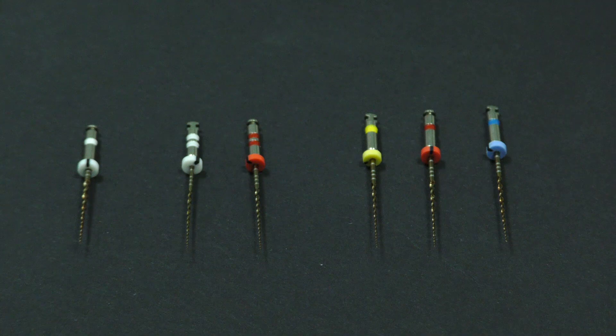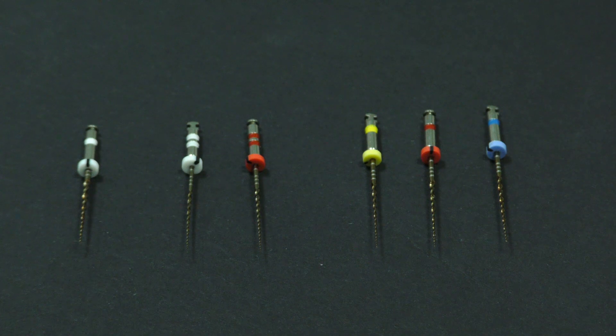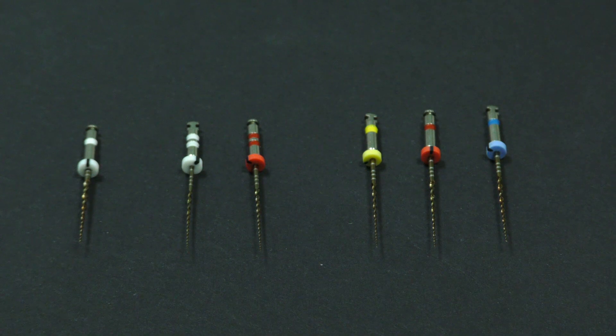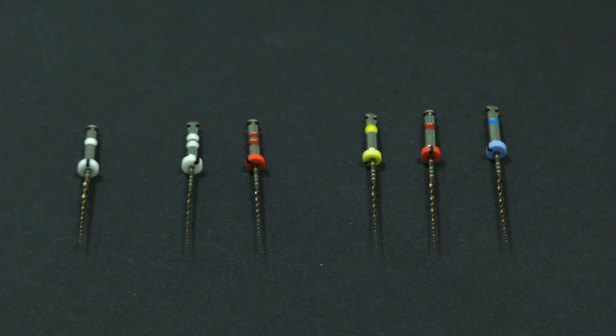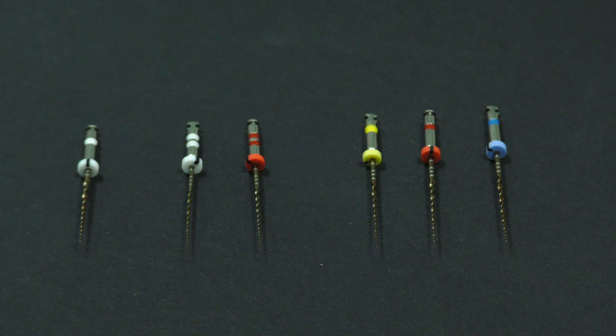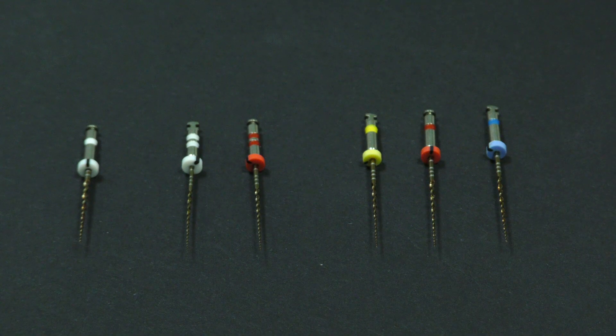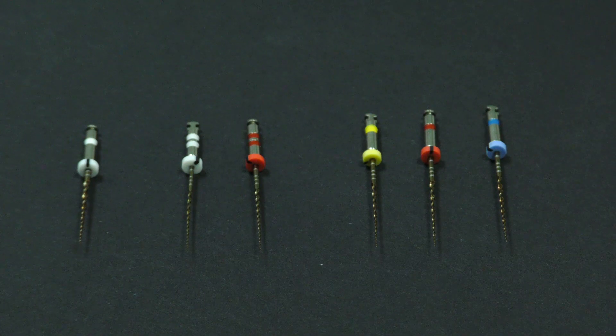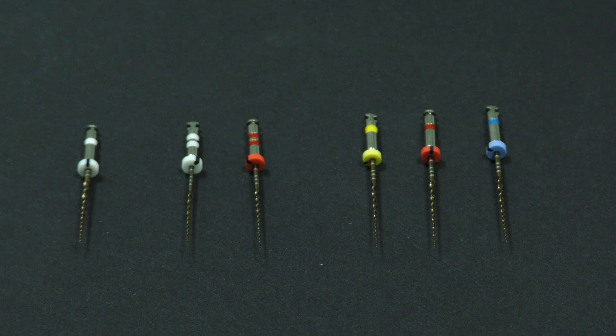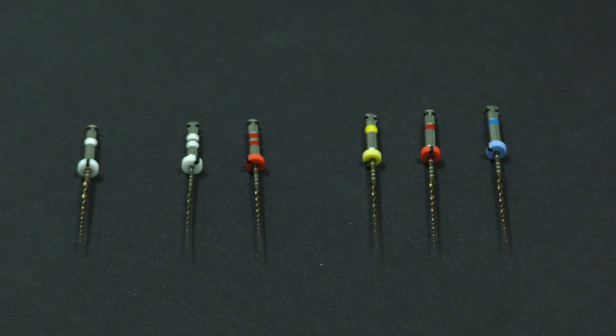VS Flexi DPS set consists of opening file 20-06 with length of 21 mm, two machine glidepath files size 13-04 and 17-04 with length of 25 mm, and three shaping files sizes 20-04, 25-04, and 30-04, all with length of 25 mm.